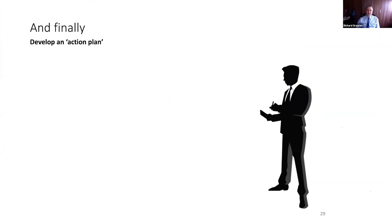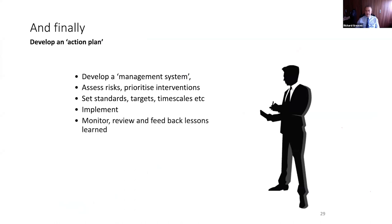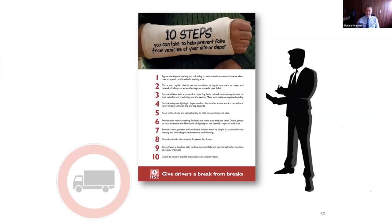From the road traffic safety management system, the action plan for managing driving at work states: assess the risk, prioritise interventions, set standards, targets, and timescales for implementation, then implement, monitor, review, and feed back any lessons learned. What are we monitoring? For example, the speeds at which people are driving.